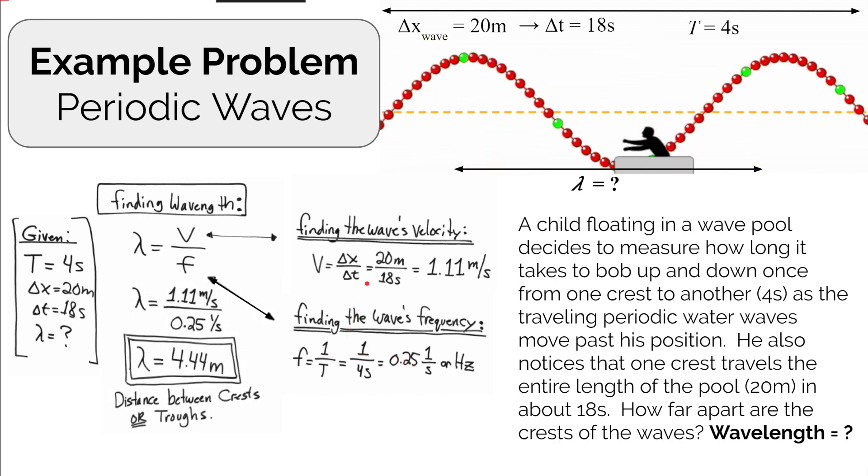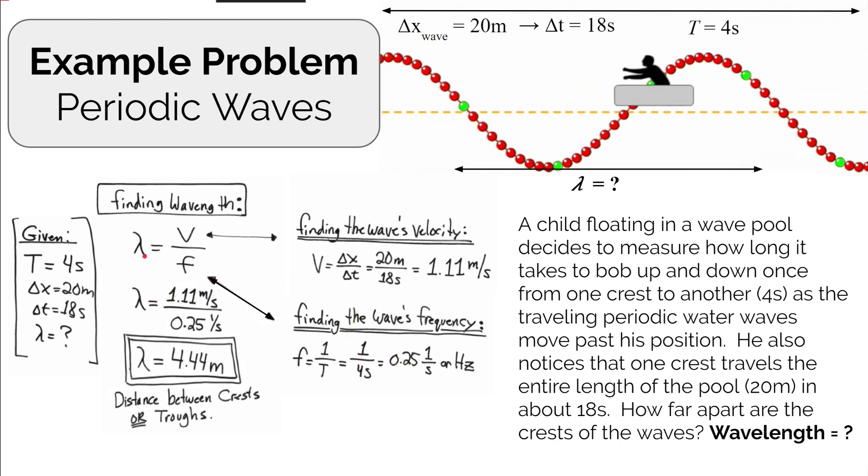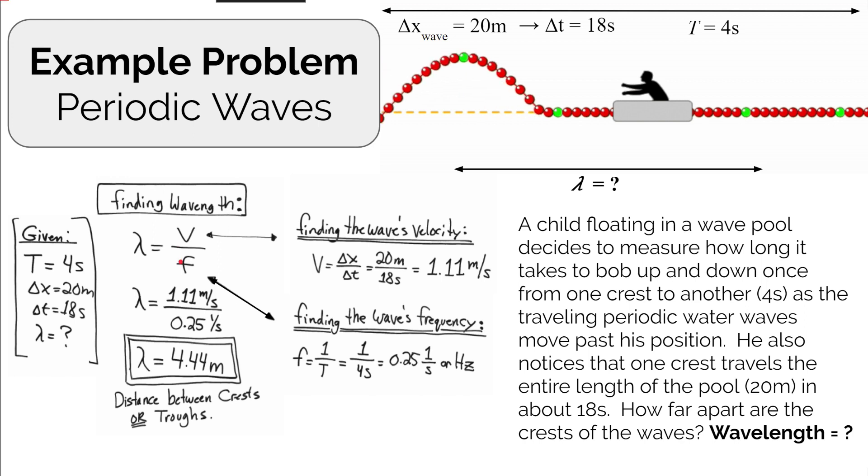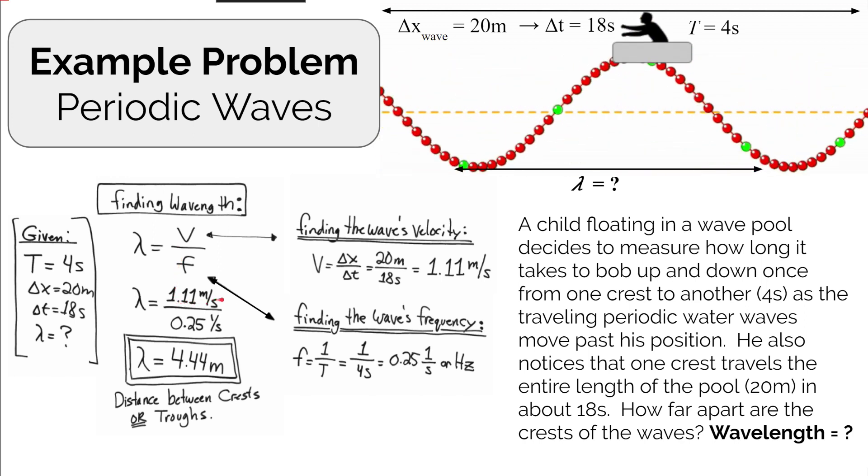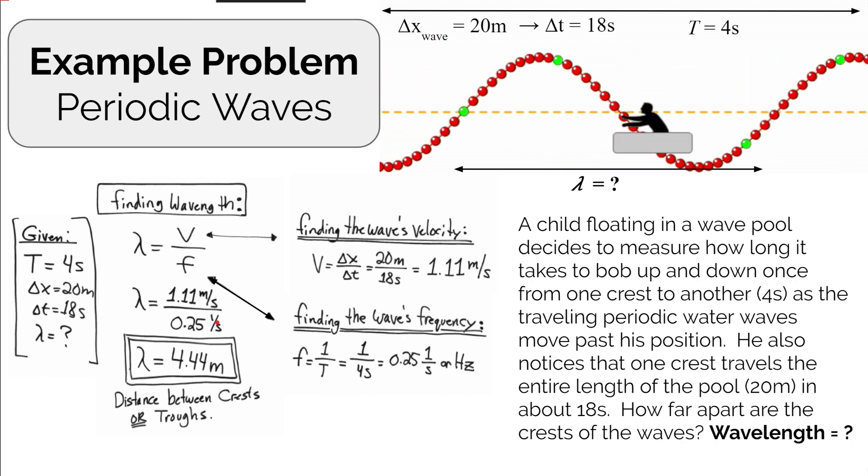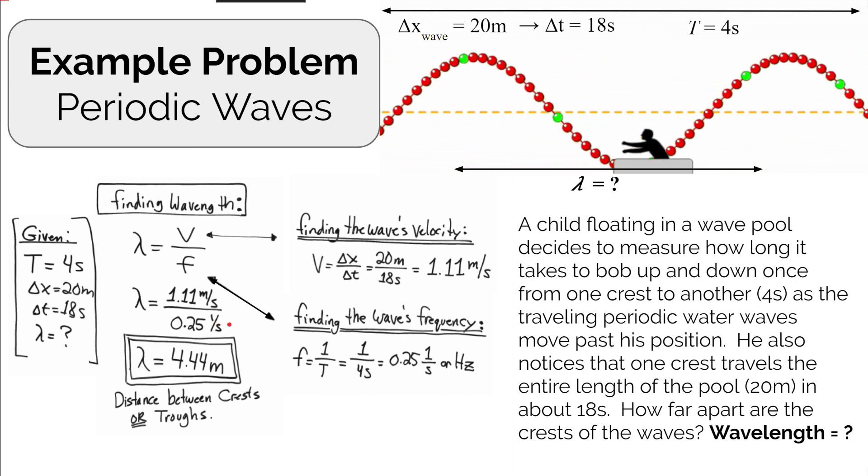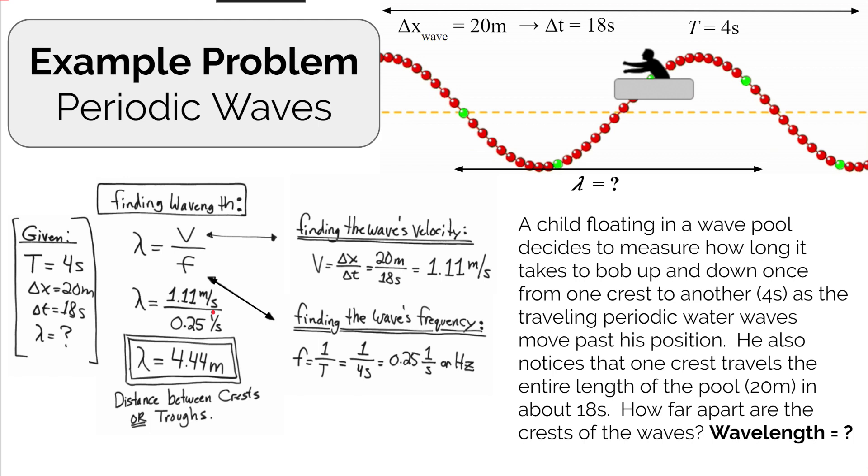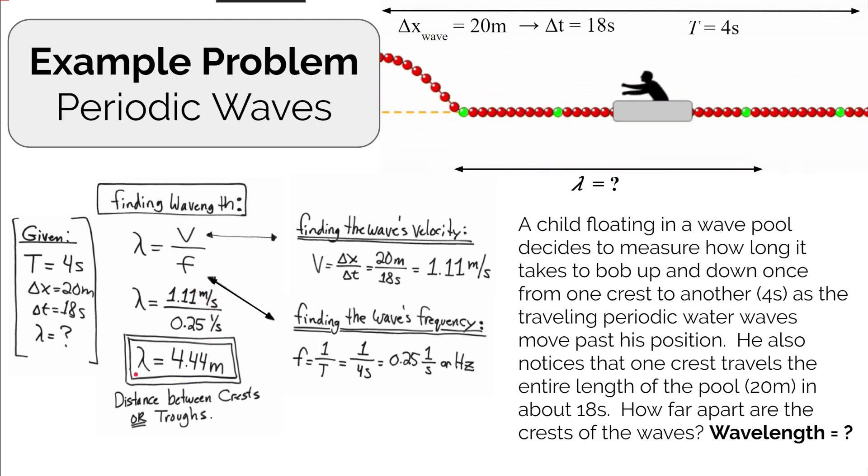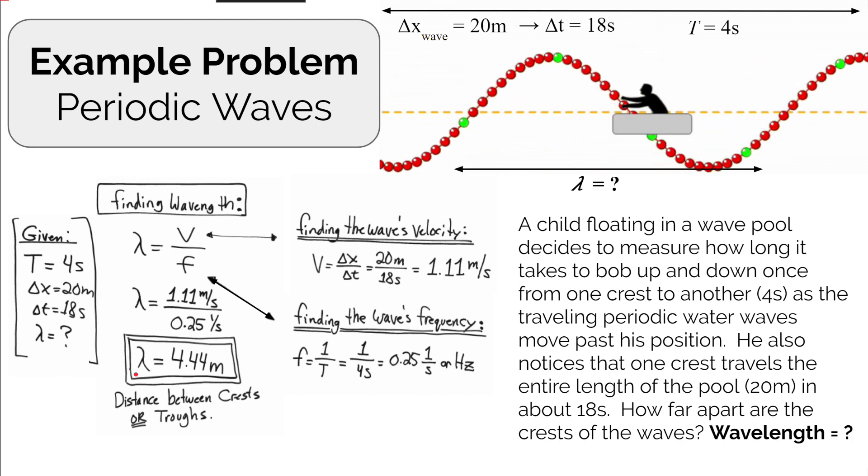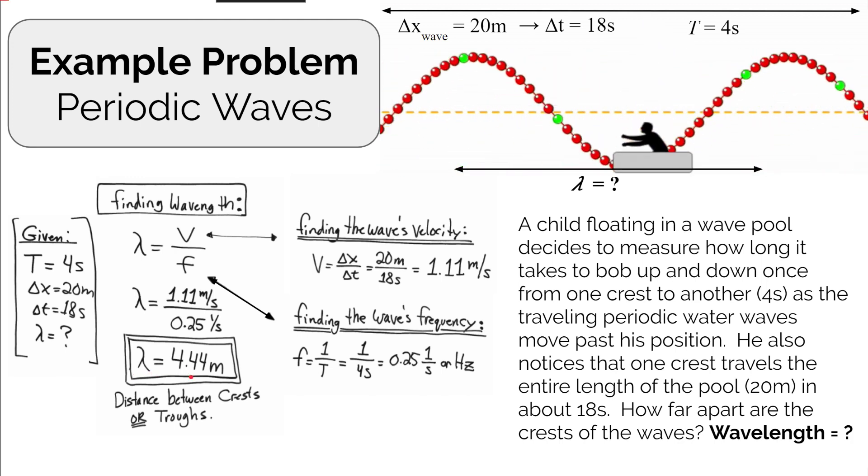Let's plug our values back in. Wavelength is velocity divided by frequency. We have 1.11 meters per second for the wave speed divided by the frequency of 0.25 hertz. The inverse seconds cancel, leaving units of meters. The wavelength, the distance from crest to crest, is about 4.44 meters.